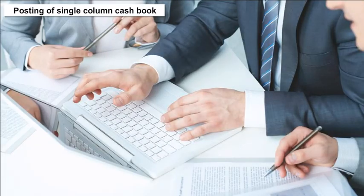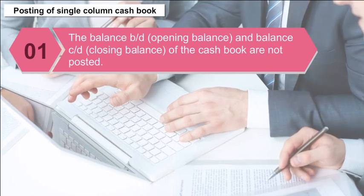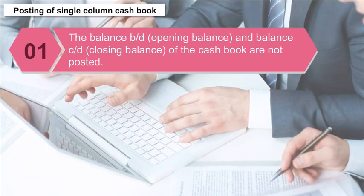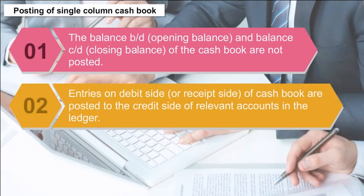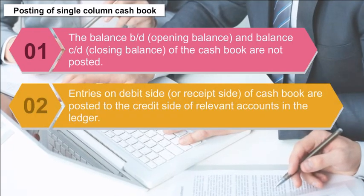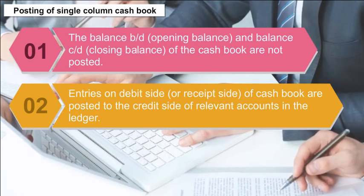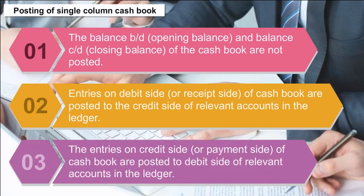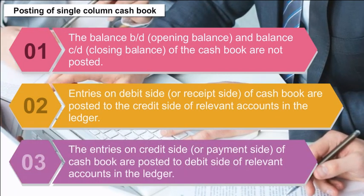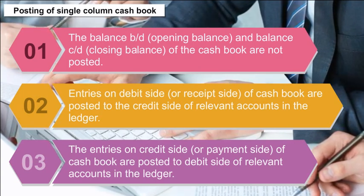Posting of Single Column Cash Book: The balance B/D (opening balance) and balance C/D (closing balance) of the cash book are not posted. The entries on the debit side or receipt side of the cash book are posted to the credit side of relevant accounts in the ledger. The entries on the credit side or payment side of the cash book are posted to the debit side of relevant accounts in the ledger.